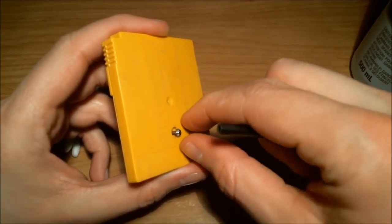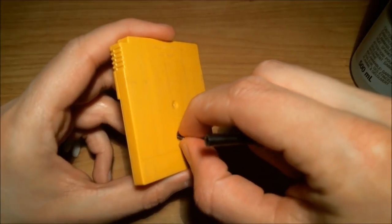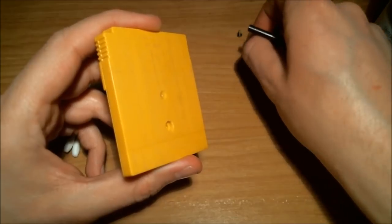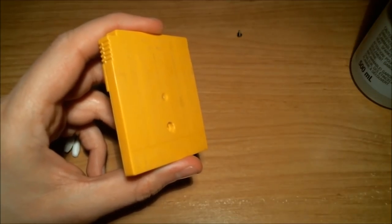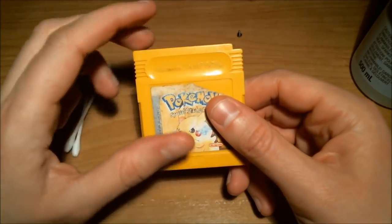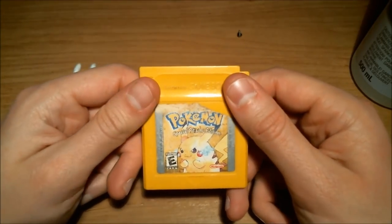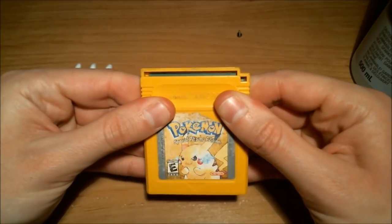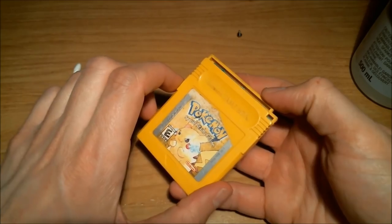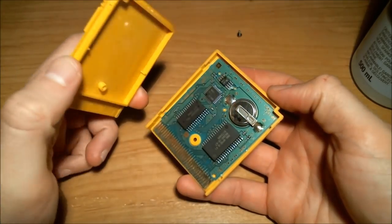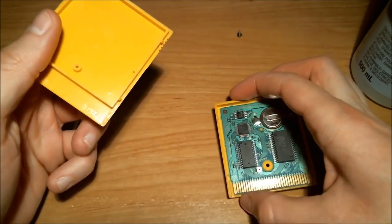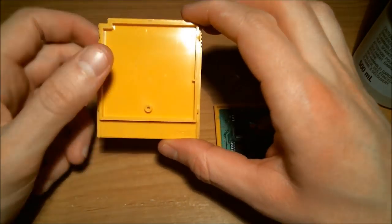The screw comes out nice and easy with the right tool. Flip it to the other side. So this cartridge just works on a sliding mechanism. Just slide it all down like that and the top comes off. There we are.